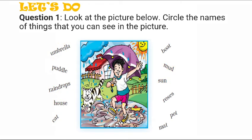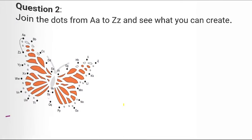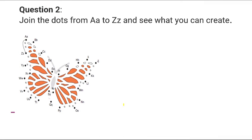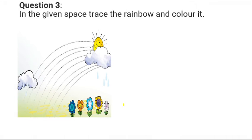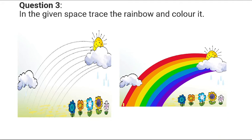Now for the next question: join the dots from A to Z — numbers and alphabets. Trace the dotted line to join the dots. Once you have done that, you can also add color to your drawing.